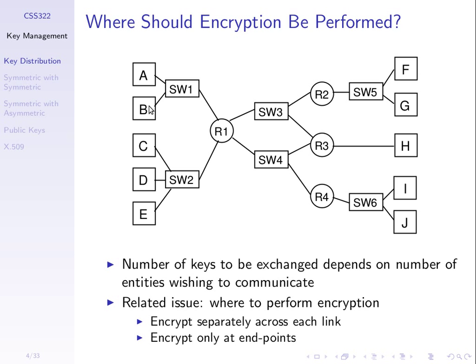If we want to send from A to F using link-level encryption: A encrypts, sends to the switch, which has the correct key to decrypt, then encrypts again to send to router R1, which decrypts and encrypts again to send to switch 3, decrypt, encrypt, and so on until it is received at F, which finally decrypts. That's one approach — called link-level encryption — where we apply encryption separately on every link in the network.